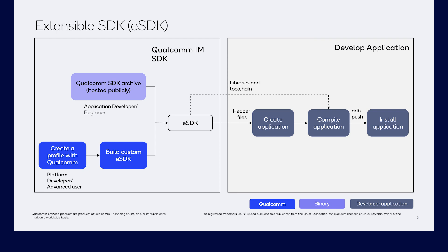The platform eSDK is an installer that allows you to compile and modify Qualcomm IM SDK components and reference applications. We will walk you through these steps to get started and show you how to use the platform eSDK to compile and install reference applications and the Qualcomm IM SDK plugins and your own customized applications to a device, such as one with the Qualcomm Robotics RB5 Gen 2 platform. Here are the general steps to set up the SDK and create an application, and in a moment we will walk you through each of these steps.